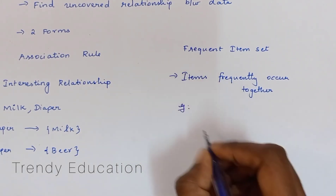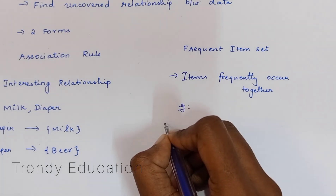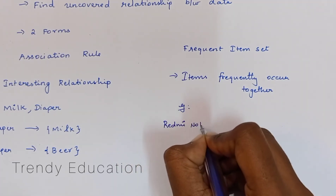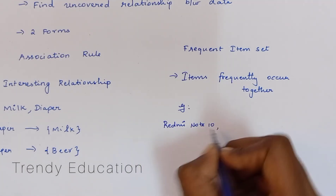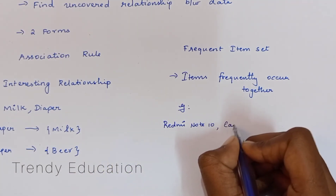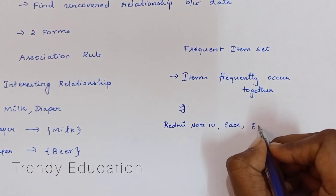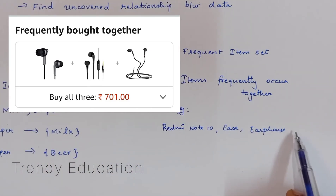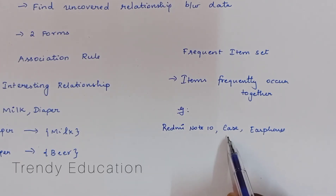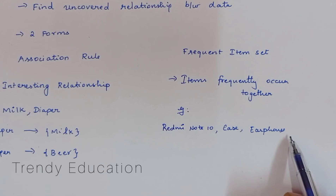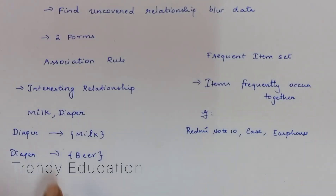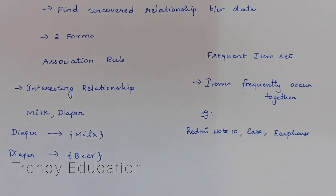Let's look at an example. When you are going to buy a phone — let's say Redmi Note 10 — you plan to buy the Redmi Note 10, then you are also going to buy the case for that phone and the earphones. So this is a frequent item set, because most people who are buying the Redmi Note 10 will also buy the case and the earphones. I'll explain association rule and frequent item set in detail in another video.